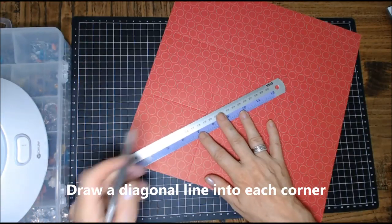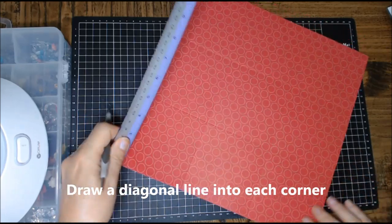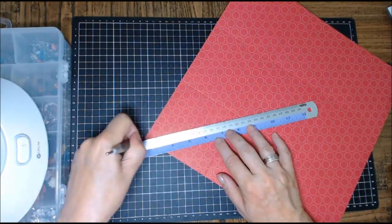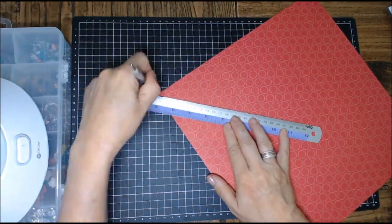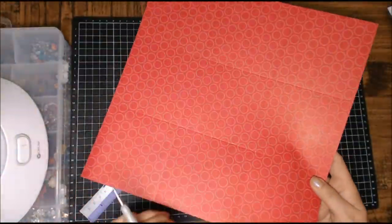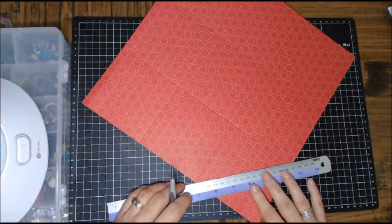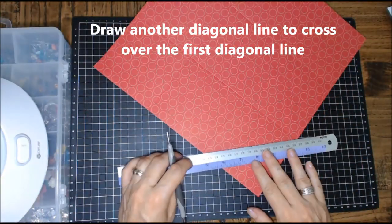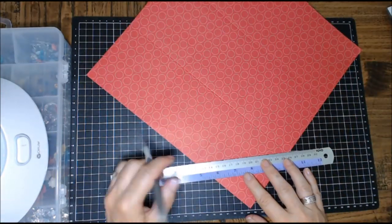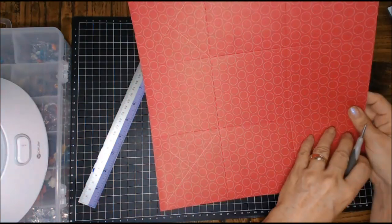Draw a diagonal line into each corner using a ruler and a pencil. Now make sure those three squares in the middle are going to remain clear. You're going to draw another diagonal line to cross over the first diagonal lines, so you've made a cross in each of the four corners.